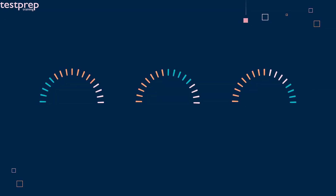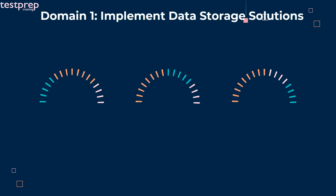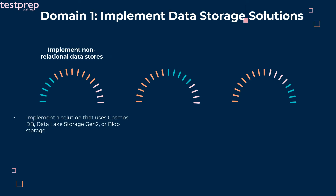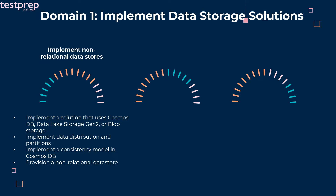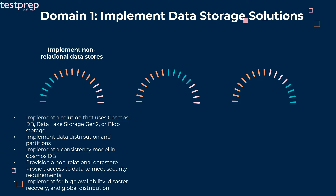Let us now discuss the course outline topics in detail. First, implement data storage solutions. Number one: implement non-relational data stores. It contains six subtopics. First, implement a solution that uses Cosmos DB, Data Lake Storage Gen 2, or Blob Storage. Second, implement data distribution and partitions. Third, implement a consistency model in Cosmos DB. Fourth, provision a non-relational data store. Fifth, provide access to data to meet security requirements.